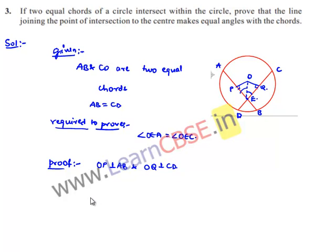Now let us consider both the triangles, that is triangle OEP and triangle OEQ. In triangles OEP and OEQ, angle OPE is equal to angle OQE is equal to 90 degrees, and here OE is equal to OE.